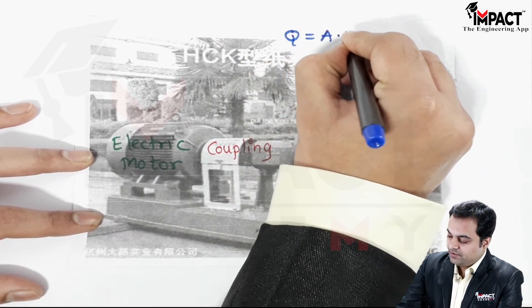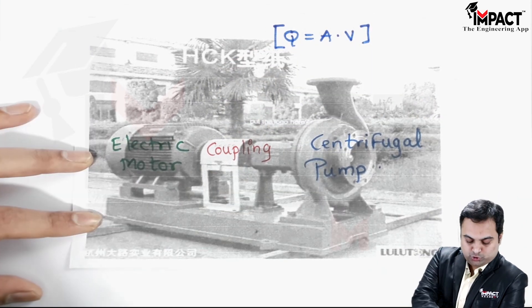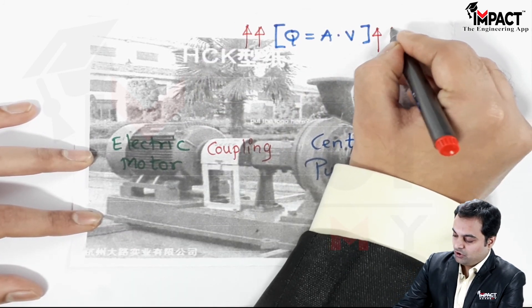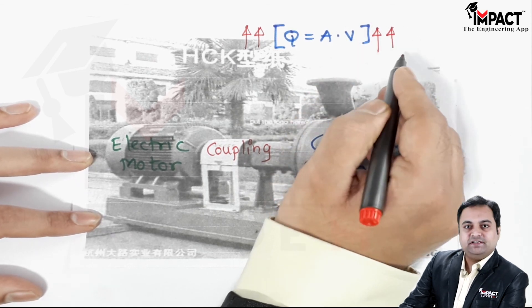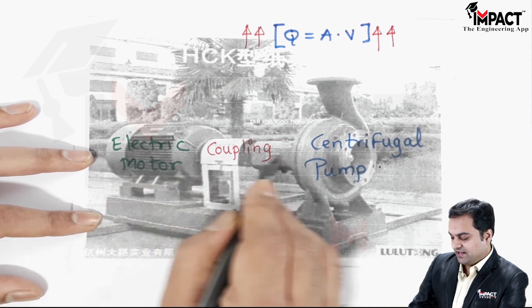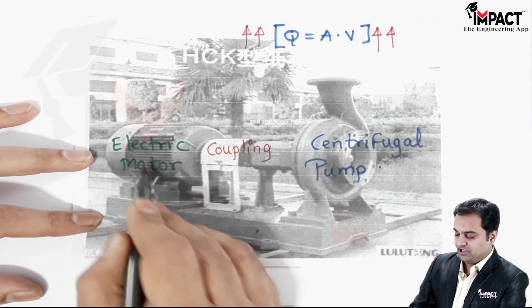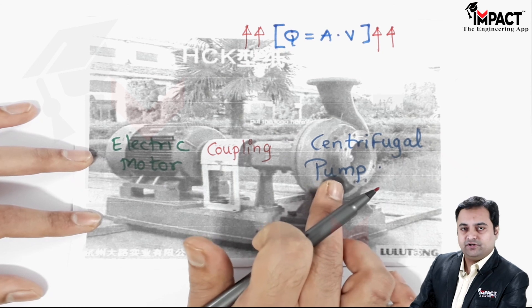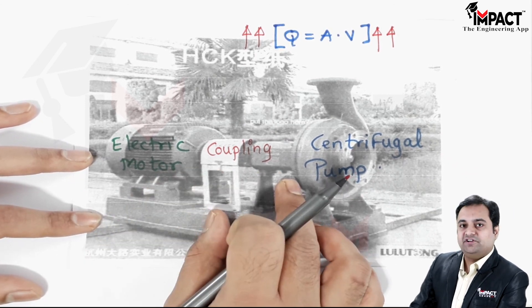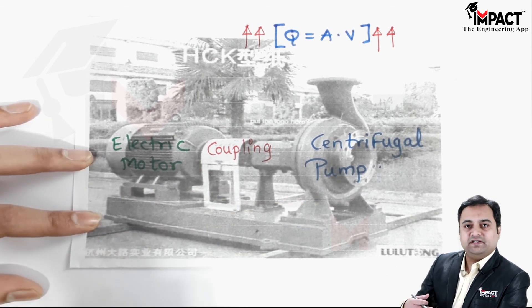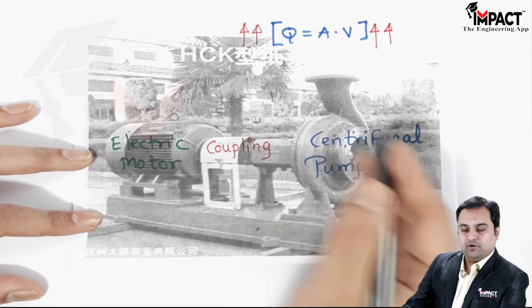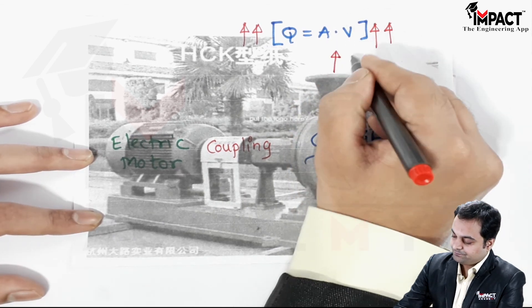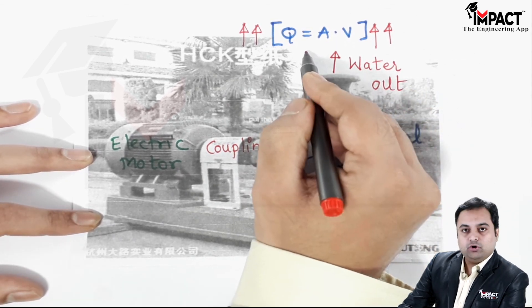Discharge is given by the formula Q = area × velocity, from the continuity equation. To increase discharge we increase velocity, so the pump is connected directly to the electric motor — there is no reduction gearbox between the motor and the impeller. This allows high-speed operation and large discharge. The delivery pipe delivers water out to a storage tank.